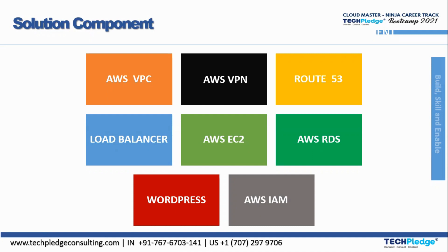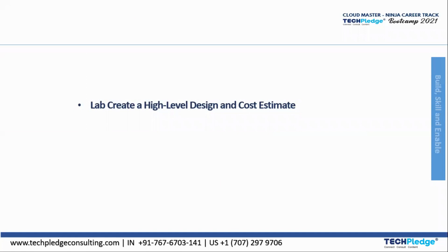So all eight components are there for the solution. Next is the lab — we will create a lab with a high-level design and cost estimate. For the sake of time, I'll be taking you to the platform where a high-level design is already created, and we'll see the cost estimate. AWS has its own cost pricing calculator, so we'll see that and then go for lab creation.